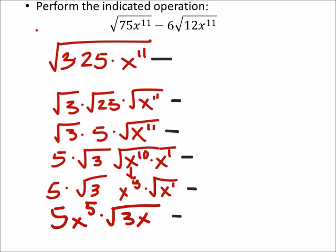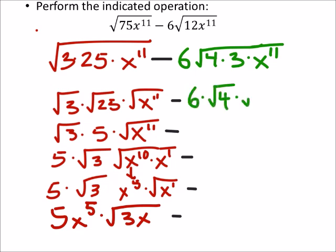Alright, we're going to subtract. We got 6 times the square root. I'll do 4 times 3 times x to the 11th. So, this is 6 times the square root of 4 times the square root of 3. I'm going to take, I'm going to factor out this x to the 11th stuff. And make it x to the power of 10 times x to the power of 1. Just like we did before.